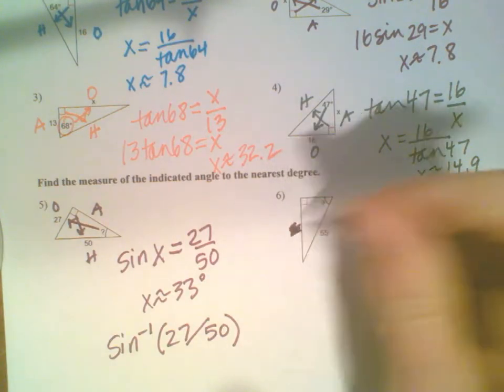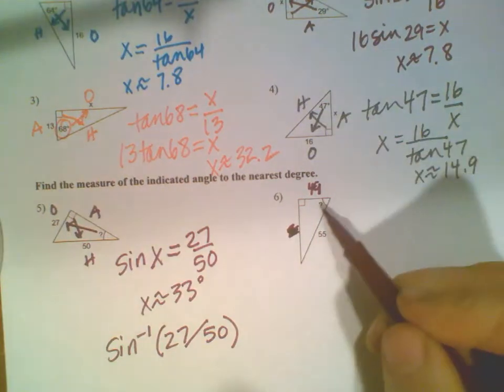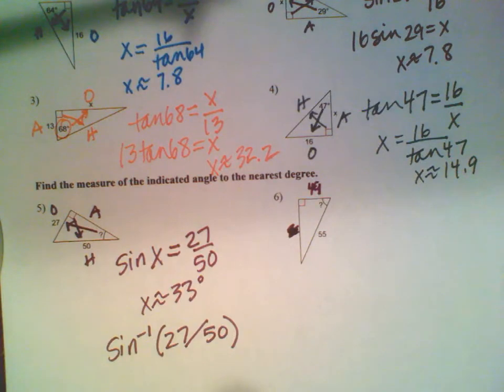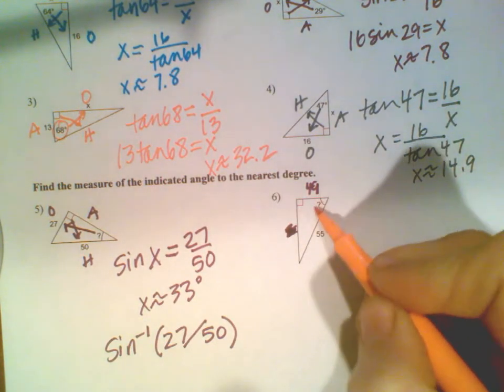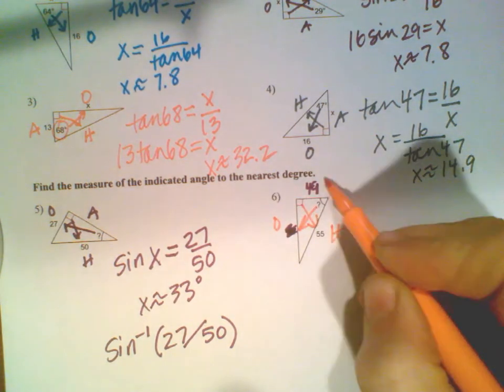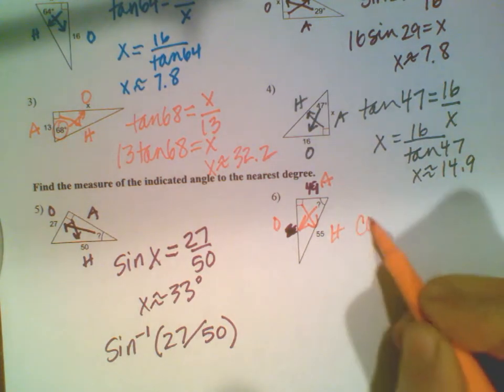I'm making up my own work as I go here, but I can - I'm the teacher. Across from the angle is the opposite, across from the right angle is the hypotenuse, the remaining side is adjacent. Adjacent and hypotenuse gives me cosine.